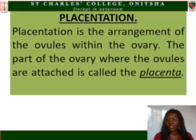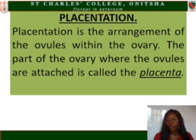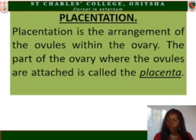The ovules are the seeds, while the ovary is the fruit. The part of the ovary where the ovules are attached is called the placenta. Even in humans and animals, we have a placenta — it is the point of attachment from the mother's uterine wall to the embryo through the umbilical cord. The same concept is equally applicable to fruits.